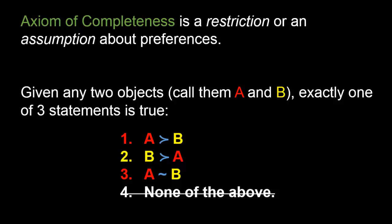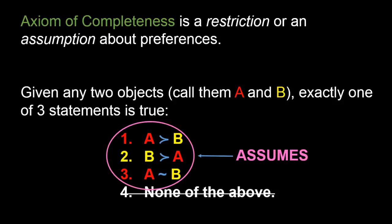We can think of the axiom of completeness as a restriction or assumption about what preferences look like. In particular, by imposing this axiom, we are assuming that the consumer, whenever given any two goods, can definitely say for sure which of these three statements is true — she either strictly prefers one to the other, or she is indifferent between them. She is not allowed to say she has no opinion, that she has never heard of an apple, or give some other answer. She must always choose one of these three statements as a correct description of her pairwise preference.